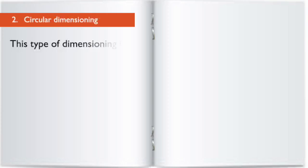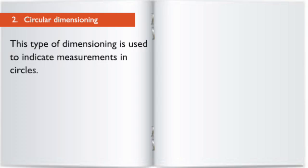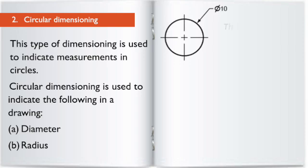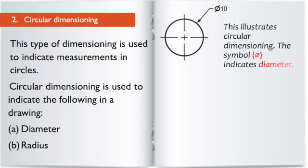Circular dimensioning. This type of dimensioning is used to indicate measurements in circles. Circular dimensioning is used to indicate the following in a drawing: 1. Diameter. 2. Radius. This illustrates circular dimensioning. The shown symbol indicates diameter.